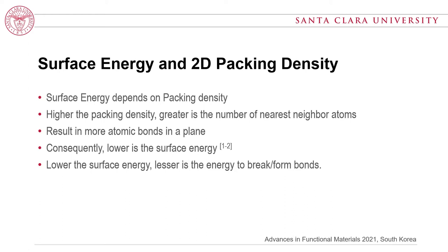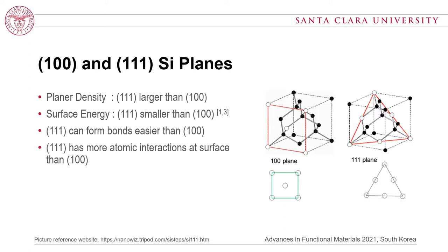Let's see how we can relate this theory to silicon planes. Consider the 100 and 111 silicon planes. The picture on the right shows the atom distribution with respect to the 100 plane and 111 plane. It is a fact that the planar density for the 111 plane is larger than for the 100 plane, and a larger planar density means lesser surface energy. Therefore, the 111 plane has smaller surface energy than the 100 plane, meaning the 111 plane can form bonds more easily and has more atomic interactions at the surface than the 100 plane.